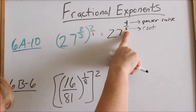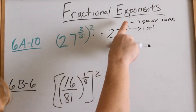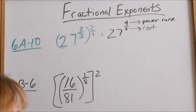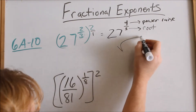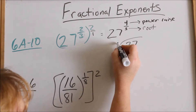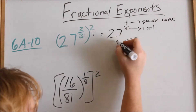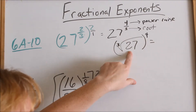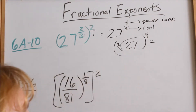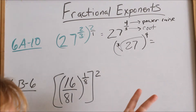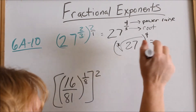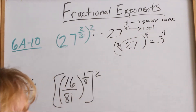Normally I take the root first. So 27 to the 4/3 means I want to take the cube root of 27, then raise it to the 4th power. If I want to write it in radical format, I would write the cube root of 27 raised to the 4th power. The cube root of 27 — what times itself 3 times gives you 27? That would be 3, because 3 times 3 is 9, times 3 is 27.